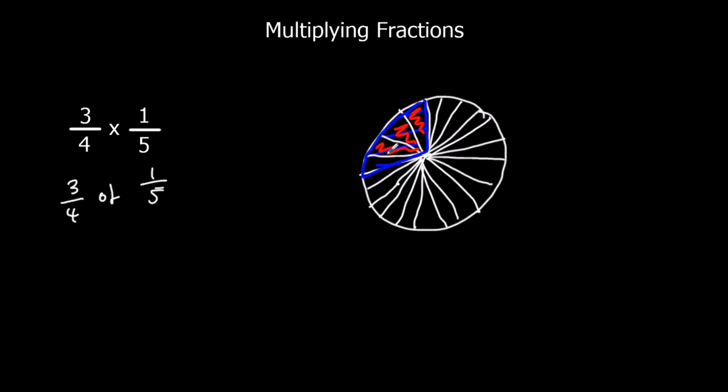So now what I've got is I've got three bits out of all of those bits in total. So I've now got three bits out of, well, there should be 20. There should be 20 of these.